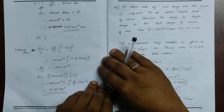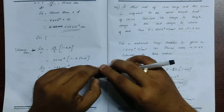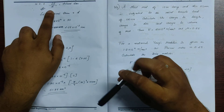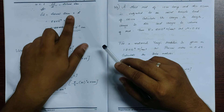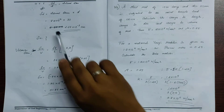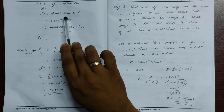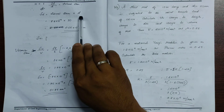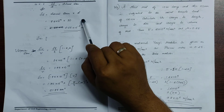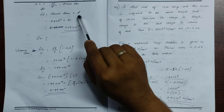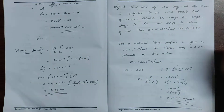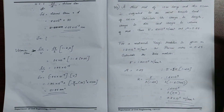Since we have found the lateral strain, it is applicable for the diameter. Therefore, change in diameter divided by original diameter equals lateral strain. Delta D equals lateral strain into D, which is 8.8 into 10 to the power minus 5 into 30, equal to 2.65 into 10 to the power minus 3.